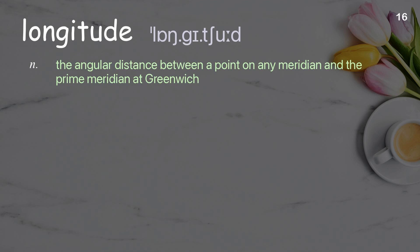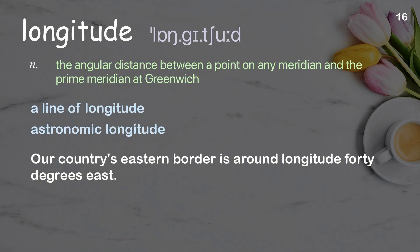Longitude: The angular distance between a point on any meridian and the prime meridian at Greenwich. Examples: A line of longitude. Astronomic longitude. Our country's eastern border is around longitude 40 degrees east.